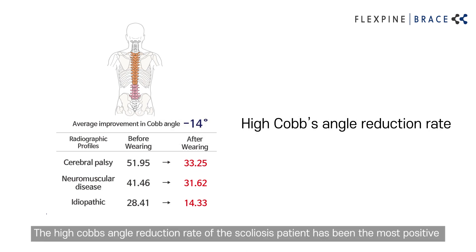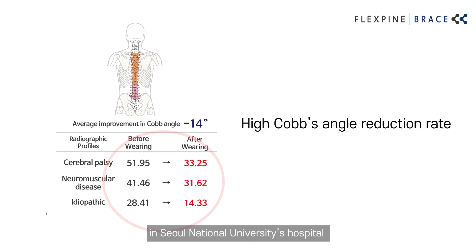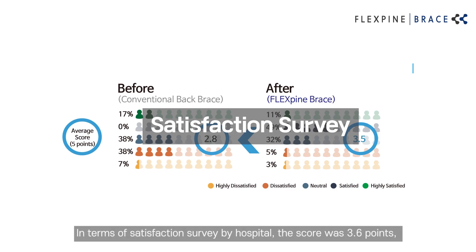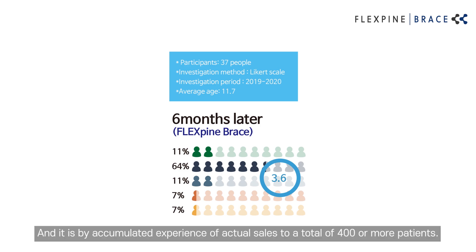The high Cobb's angle reduction rate of scoliosis patients has been the most positive outcome. In terms of a satisfaction survey conducted by the hospital, the score was 3.6 points, which is much higher than that of the existing rigid brace. This is based on accumulated experience from actual sales to a total of 400 or more patients.